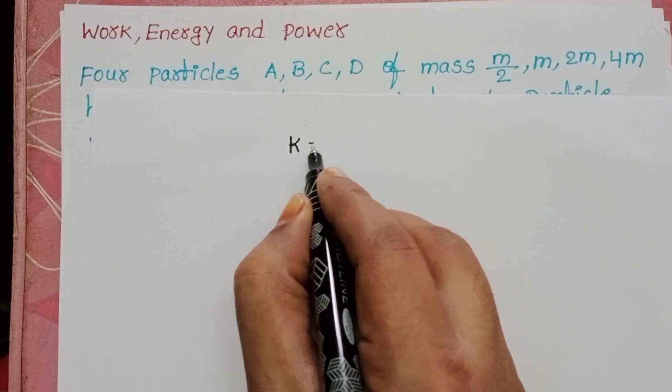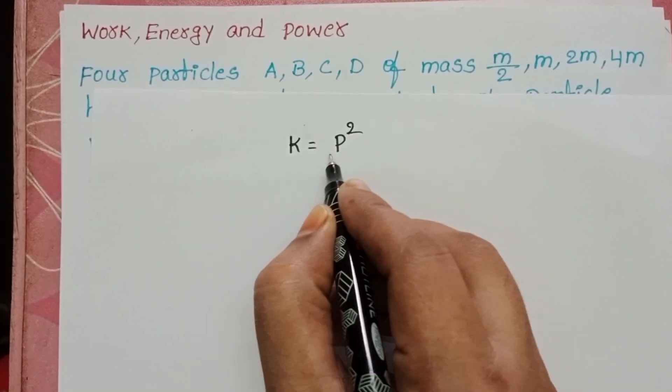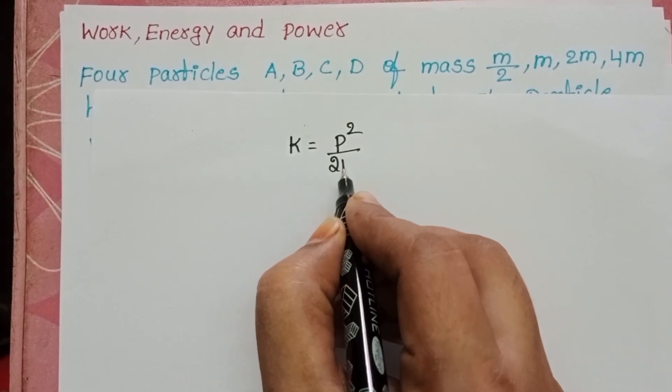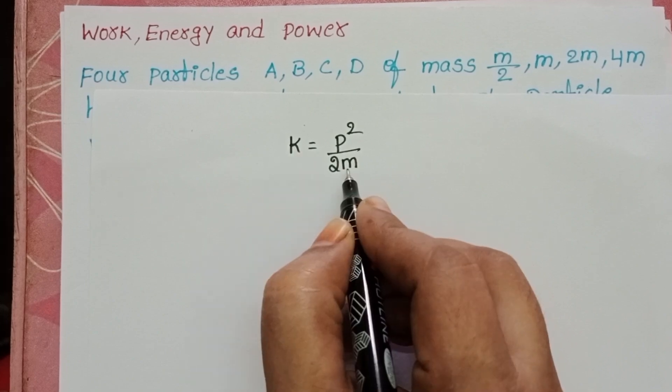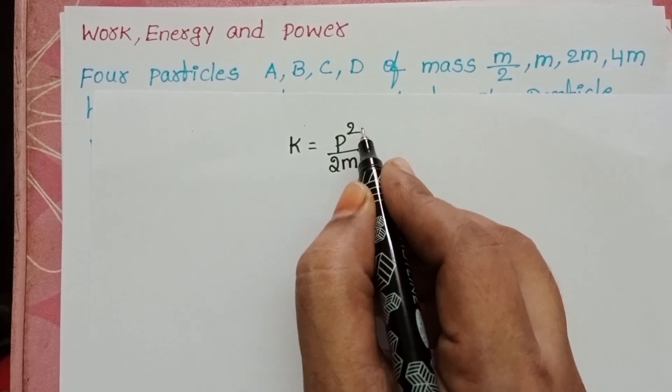Kinetic energy is equal to the square of the momentum by 2 into mass of the particle. This is the relation between kinetic energy and momentum.